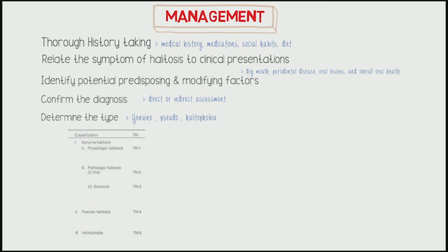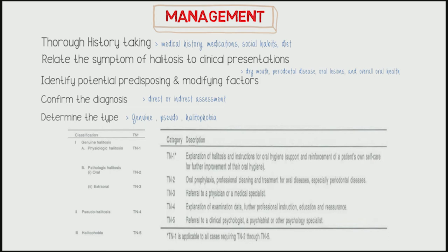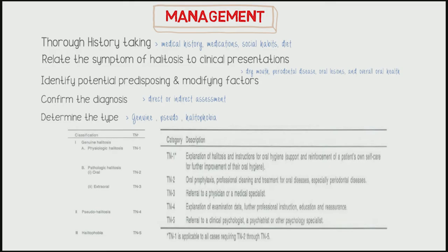The exact treatment corresponding to the type of halitosis should be employed. As seen in the photo, treatment needs — abbreviated TN — are categorized into five classes. TN1, for physiological halitosis, requires reinforcement of oral hygiene. TN2, for pathological halitosis, requires professional scaling and oral prophylaxis. TN3, for extraoral pathological halitosis, requires referral to a medical specialist. TN4, for pseudo halitosis, requires reassurance, professional instructions, and education. TN5, for halitophobia, requires psychological counseling.